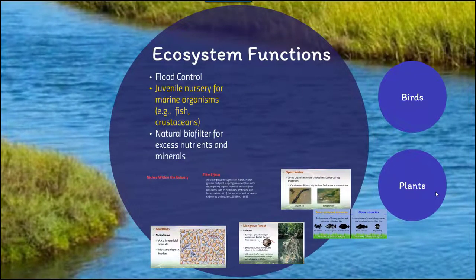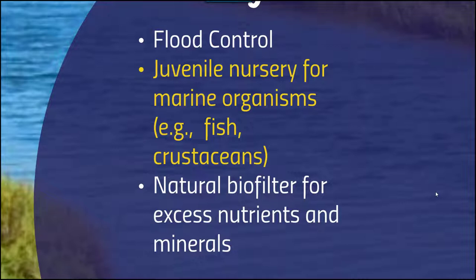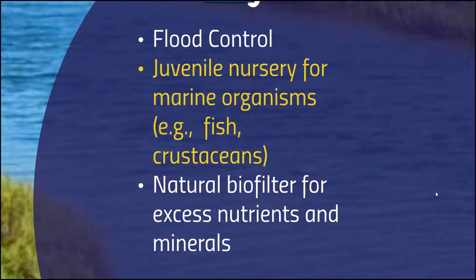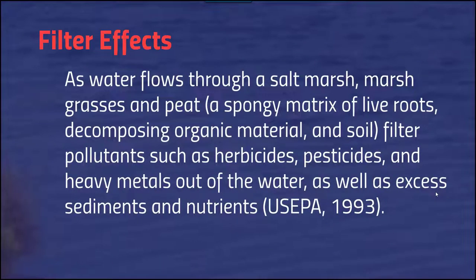Communities of organisms find these ecosystems incredibly important. These estuaries offer flood control — flooding from offshore rivers is retained and captured within the estuary. They serve as the juvenile nursery for many marine organisms, including fish and cetaceans. They also act as a natural biofilter for excess nutrients and minerals deposited from the river system. As water flows through a salt marsh, marsh grasses and peat — a spongy mix of live roots and decomposing organic material and soil — filter out pollutants such as herbicides, pesticides, and heavy metals, and also deal with excess sediments and nutrients.